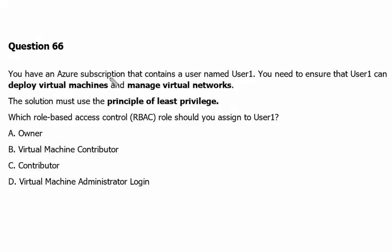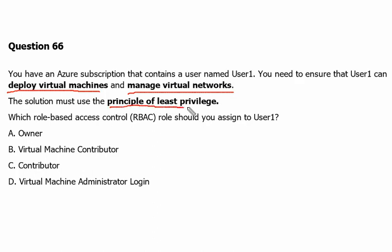You have an Azure subscription that contains a user named User1. You need to ensure that User1 can deploy virtual machines and manage virtual networks — two tasks. First is deployment of virtual machine, second is manage virtual network. The solution must use the principle of least privilege — we should not give any privilege which is not required. Which role-based access control role should you assign to User1?